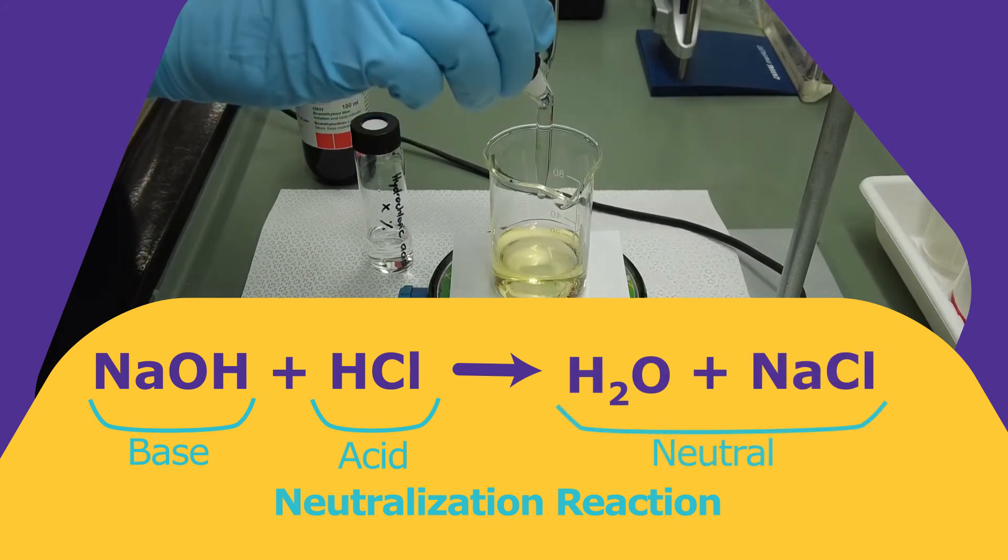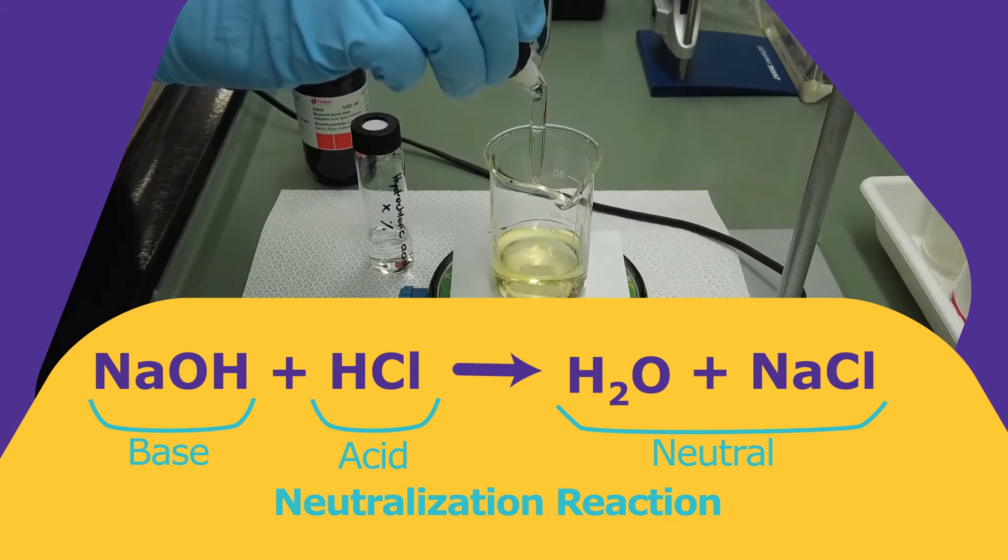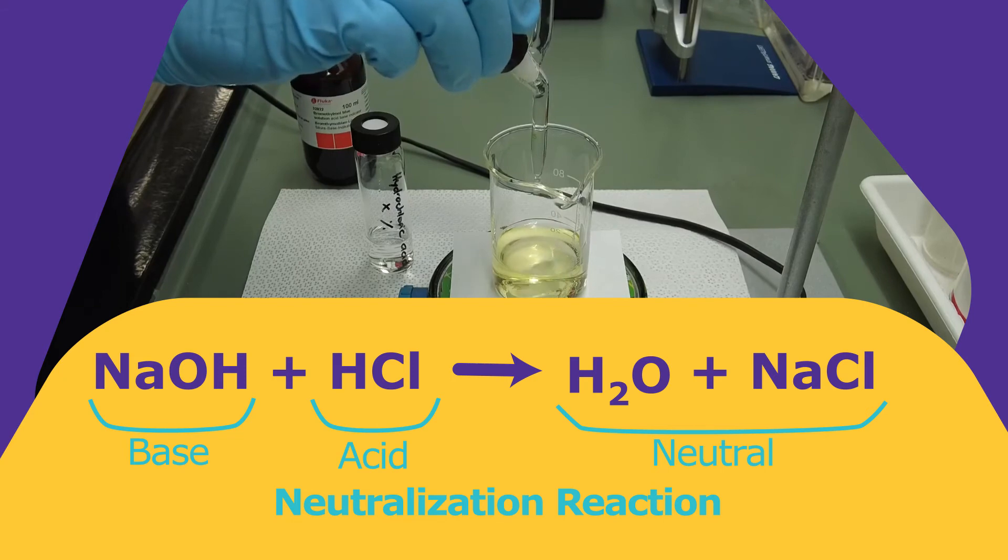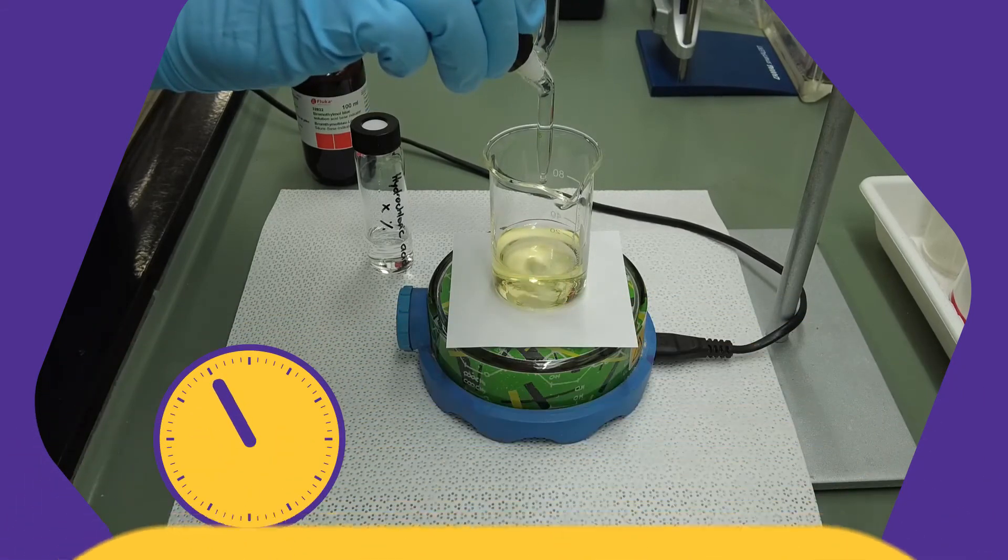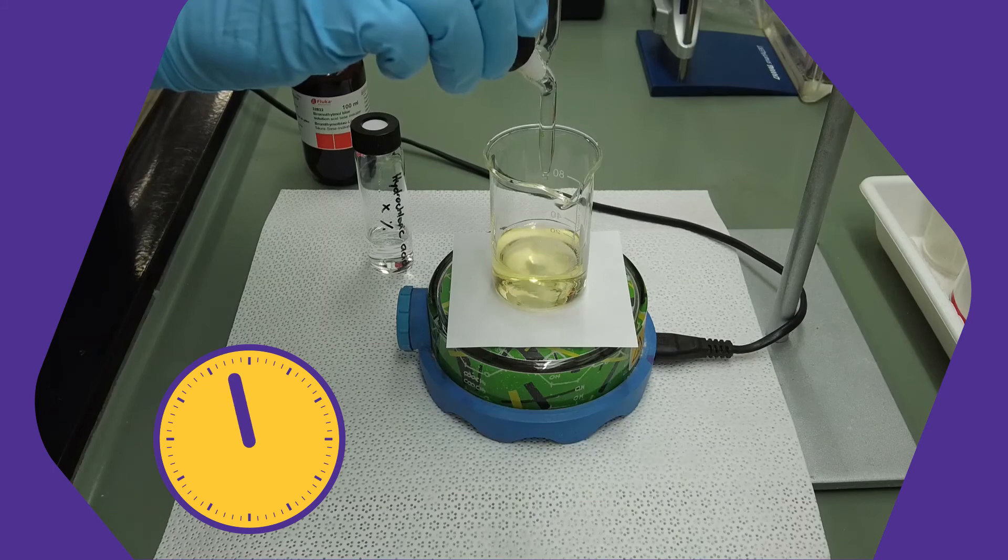We add the sodium hydroxide solution until the color changes. Then we have reached the equivalence point. We can read the used volume of the sodium hydroxide solution on the burette. In our example, 20 milliliters were required.